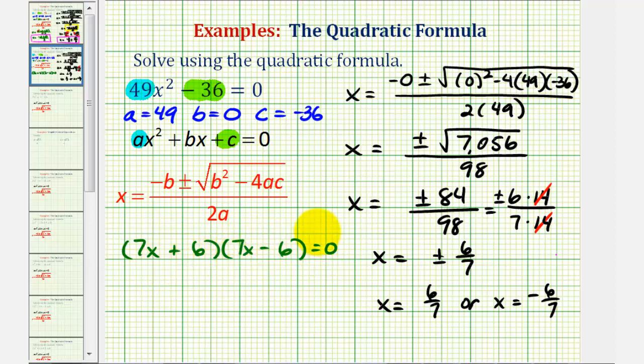So if this product is equal to zero, then seven x plus six must equal zero, or seven x minus six must equal zero. Here we would subtract six on both sides, divide by seven. Here's one solution of x equals negative six-sevenths.